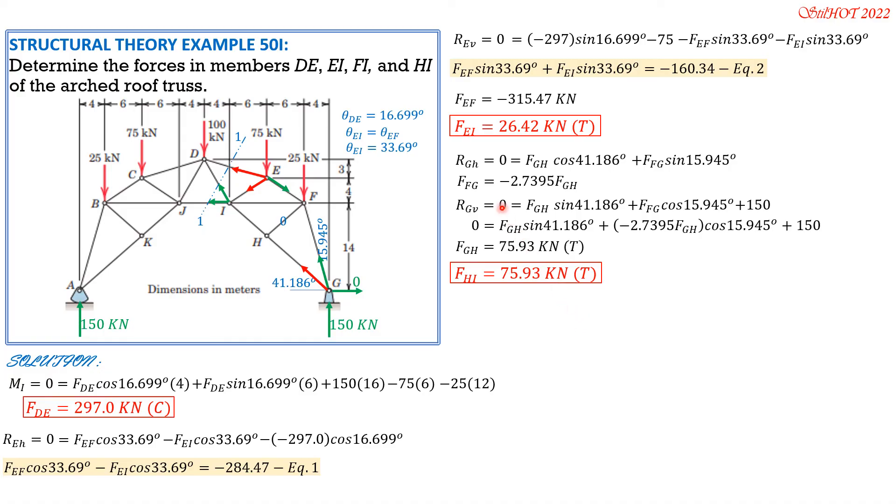The value of FFG, because we need that to isolate Joint F to solve for FI. So FFG is negative 2.7395 of 75.93, so FFG is compression or negative 208.0 kilonewtons. Finally, we isolate Joint F. This is FI required, and FFG is also known downward. The angles are already found. FEF is also found: negative 315.47.